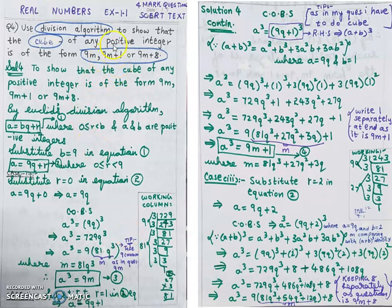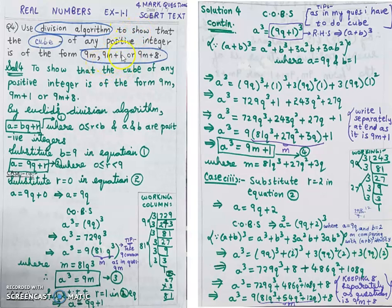Case 2: I have to prove a³ = 9m plus 1. The tip here is: since 1³ = 1, I substitute r = 1 into the equation, giving a = 9q plus 1. Cubing both sides: a³ = (9q + 1)³.